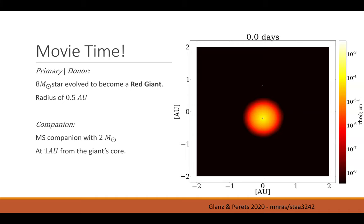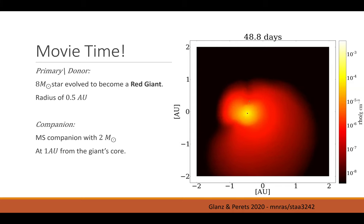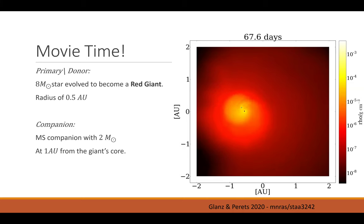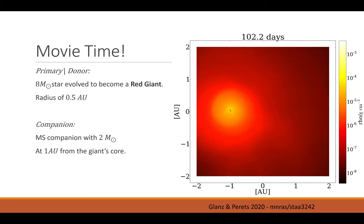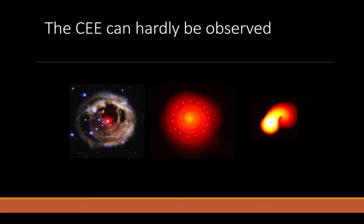Now for one of the best parts of my presentation — a movie. Let's see an example. This is a binary common envelope evolution of an 8 solar mass red giant with a 2 solar mass companion, initially located at a distance twice the size of the giant. We can see how the tidal forces create the Roche lobe overflow. Now we have the common envelope phase and the fast spiraling begins. We can also identify density waves due to the transfer of energy to the envelope from dynamical friction. They get closer and closer until in this specific case they actually merge.